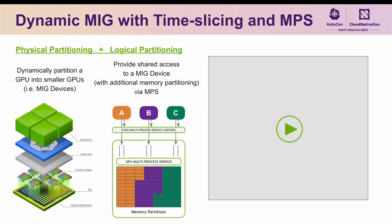This demo shows some of the advanced GPU sharing features enabled by NVIDIA's DRA resource driver for GPUs. In particular, it shows how one can request access to a hardware partition GPU — a MIG device — and then layer a sharing mechanism on top of that, called MPS, which relies on having a dedicated server process launched to service each client. When directed, the NVIDIA DRA resource driver for GPUs will dynamically create one of these MIG devices and launch an MPS control daemon to service its shared clients.